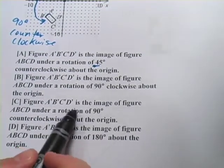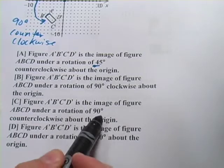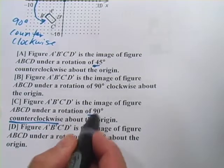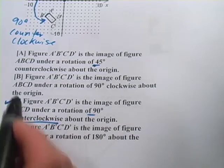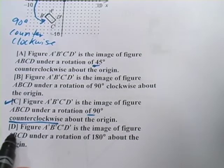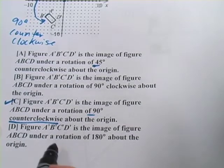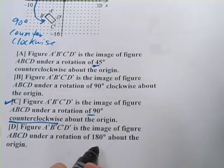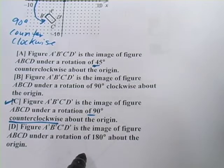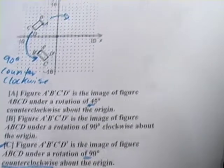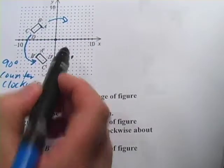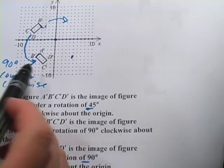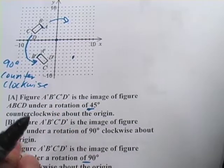Let's look at C. Figure A', B', C', D' is the image of figure A, B, C, D under a rotation of 90 degrees counterclockwise about the origin. That's the correct answer. And then let's just look at D really quickly. It says it's the image of figure A, B, C, D under a rotation of 180 degrees. Well if it was 180 degrees it would flip over to the opposite quadrant and it's not there.